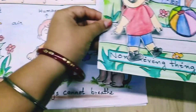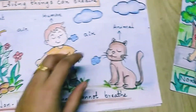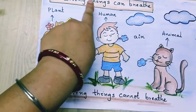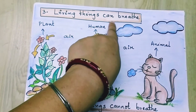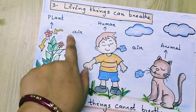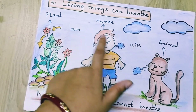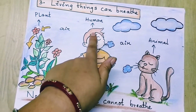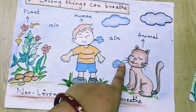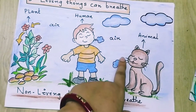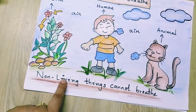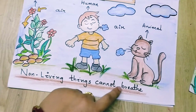Living things can breathe. Plants breathe from air, humans also breathe, and animals also breathe — see it is breathing the air. Non-living things cannot breathe.